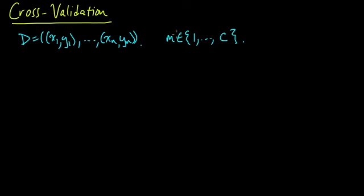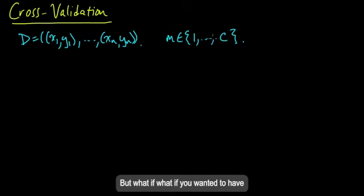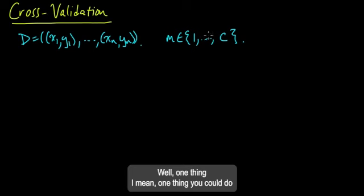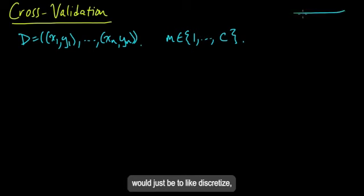And also, though, here we are assuming it's from a finite set. But what if you wanted to have a class of models with a continuous valued parameter that was controlling the model complexity? Well, one thing you could do would just be to discretize the space.